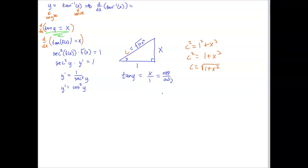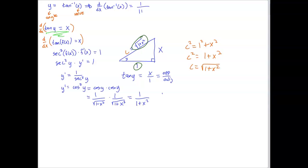Cosine squared means cosine times cosine. The ratio for cosine is adjacent over hypotenuse, so cos²(y) = (1/√(1 + x²)) · (1/√(1 + x²)). Multiplying a square root by itself eliminates the square root, so the derivative of inverse tangent is 1/(1 + x²).